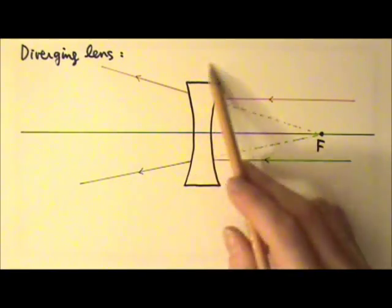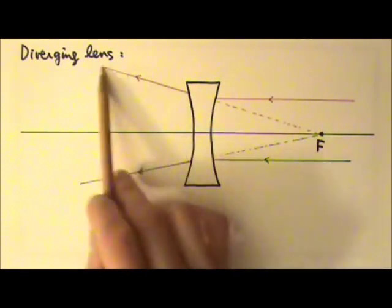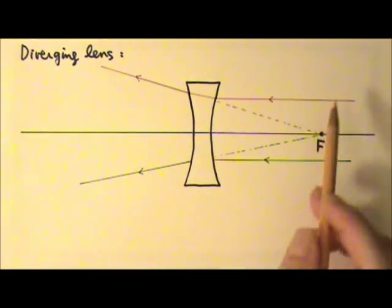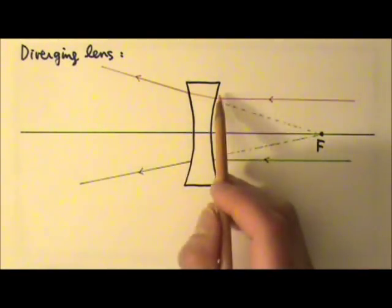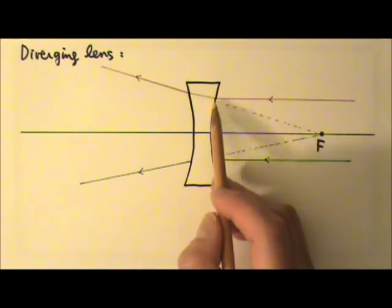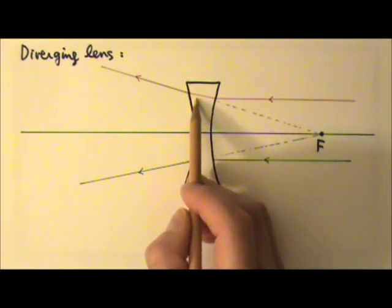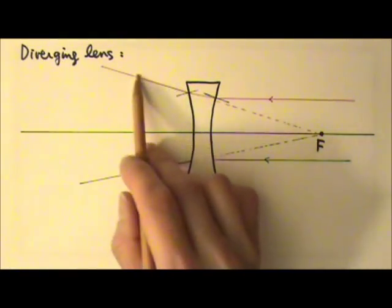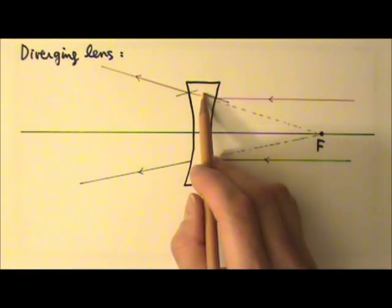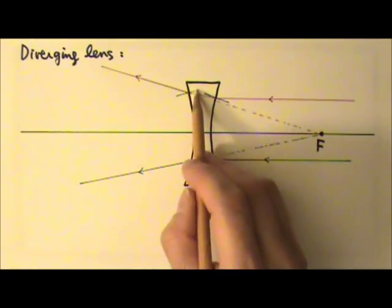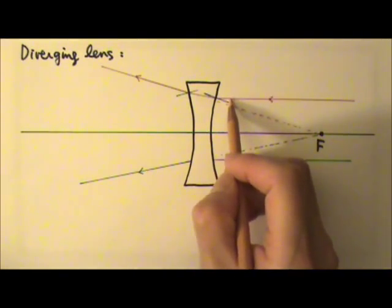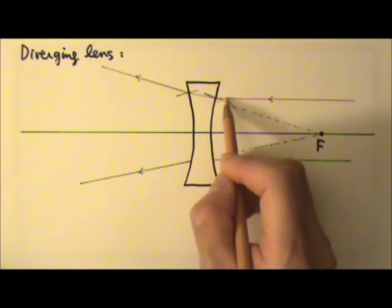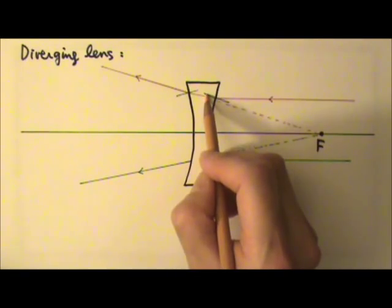The reason why this lens bends light away from the center is because of refraction. For example, this ray undergoes two refractions, once when it enters the lens, the other one when it exits the lens. To help us better see the bending of the ray, I drew two normal lines at the interface here and the interface here. When the ray goes from air into glass, the light slows down, therefore the angle gets smaller over here.